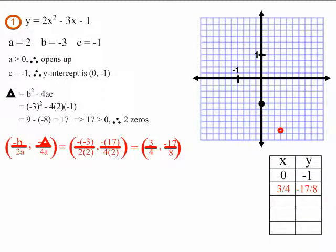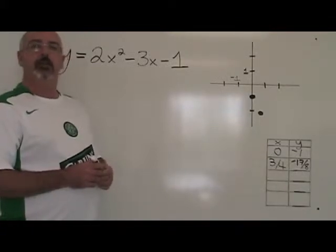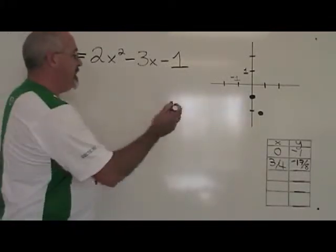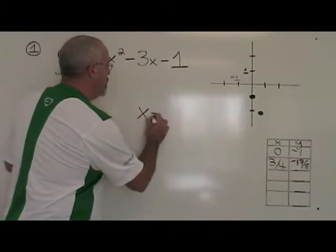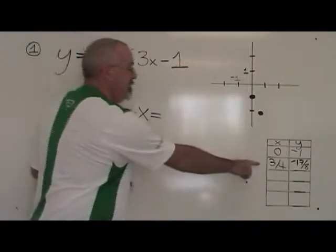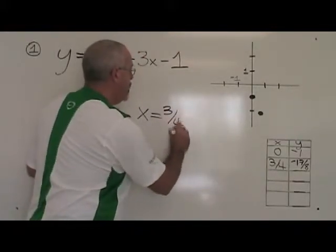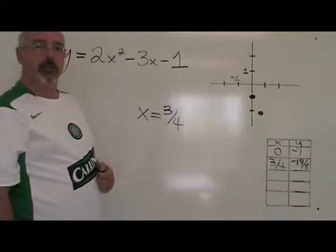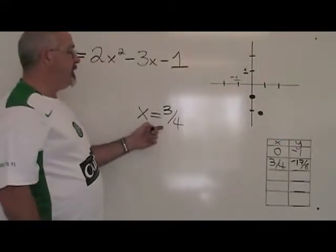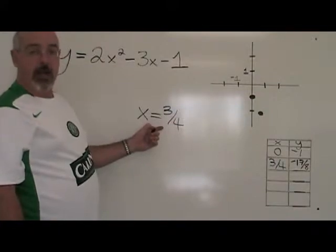This is what example one looks like before finding the equation of the axis of symmetry. The equation of the axis of symmetry is x equals the x coordinate of the vertex. The x coordinate of our vertex was 3 quarters, so the equation of our axis of symmetry is x equals 3 quarters. This is a vertical line that goes up and down through the graph, crossing the x-axis at 3 quarters.